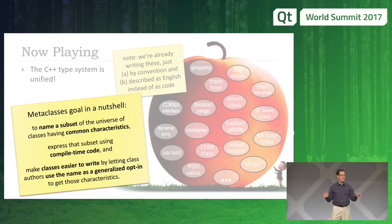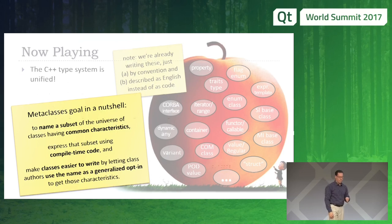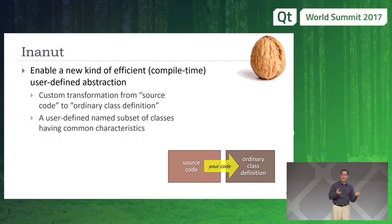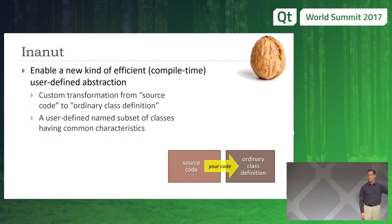So concepts — if you're familiar with C++ concepts, which were just voted into the C++20 working draft — they let you query types. Think of these as constructive concepts that let you define, not just say 'is this an iterator?' but help me write an iterator and automate the boilerplate. In a nutshell, the idea is I want to enable a new kind of compile-time abstraction: a custom transformation from the source code you write to an ordinary class definition. What we already write today, just more convenient.